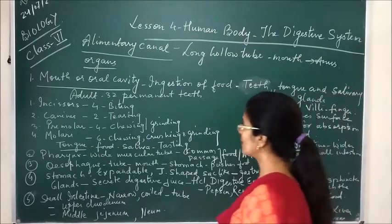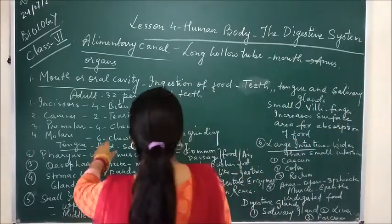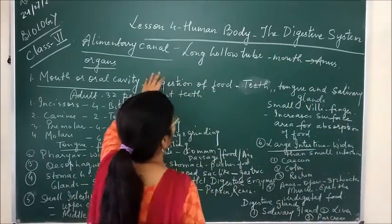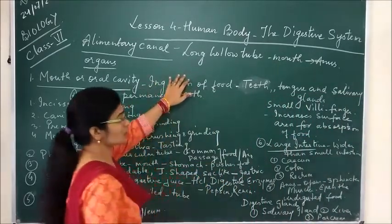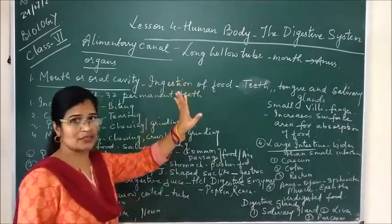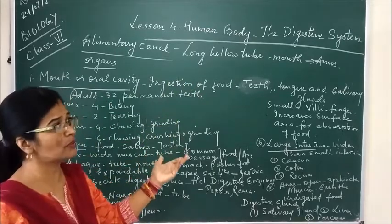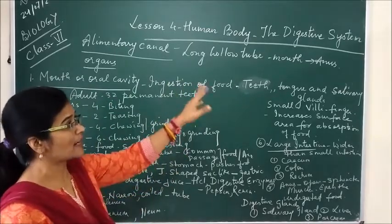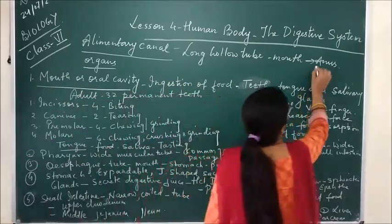Now, what is actually the alimentary canal? It is a long hollow tube-like structure and it starts from the mouth and ends up to the anus.